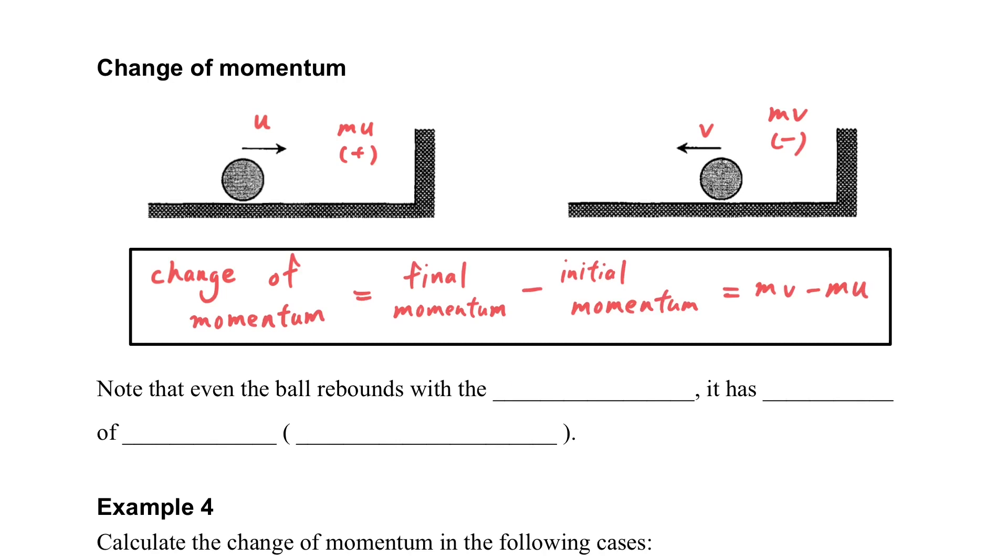Please note that even for the ball we bounce with the same speed, the change of momentum is not zero. It still has the change of momentum because the direction is changed. So one is positive and the other is minus. So the change of momentum will still be a value rather than zero.